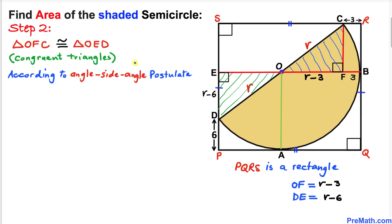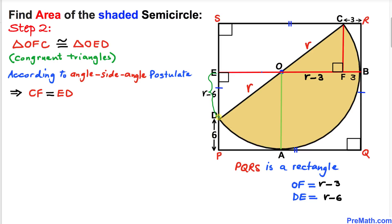Now let's focus on these two right triangles OCF and OED. We conclude that these two right triangles are congruent according to the Angle-Side-Angle postulate, because this angle is 90 degrees and this angle is 90 degrees as well, and these two angles are vertical angles so they are congruent. Moreover, the hypotenuse is radius r in both cases, therefore this side length ED is going to be equal to this side length CF. Since DE is r minus 6, CF must be r minus 6 as well.